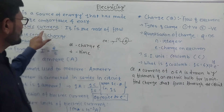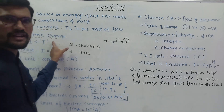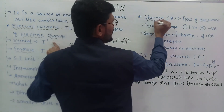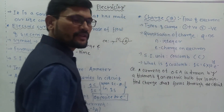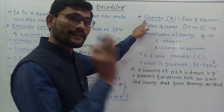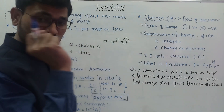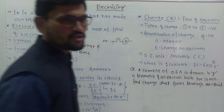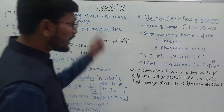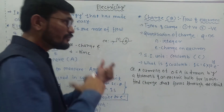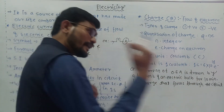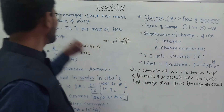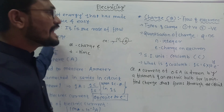In electric current we encountered the word 'charge.' Let us now focus on charge. The charge is denoted by capital Q. Flow of electrons is called charge. This electron may flow through a material, a wire, or any conductor. When this electron is flowing, then only we have what is called electric current.